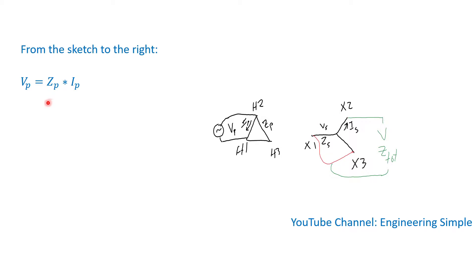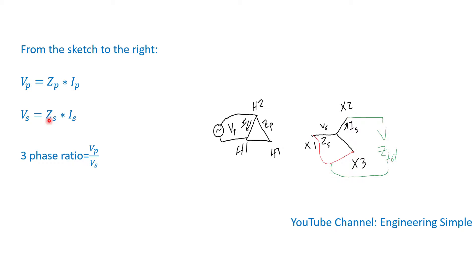Let's establish some formulas. The primary voltage is, from Ohm's law, the primary impedance times the primary current. For the secondary, assuming the neutral was accessible, the secondary voltage is just the secondary impedance times the secondary current. So the three-phase voltage ratio would simply be the primary voltage divided by the secondary voltage. But since we cannot access the neutral on the Y side, we cannot measure phase voltage directly.